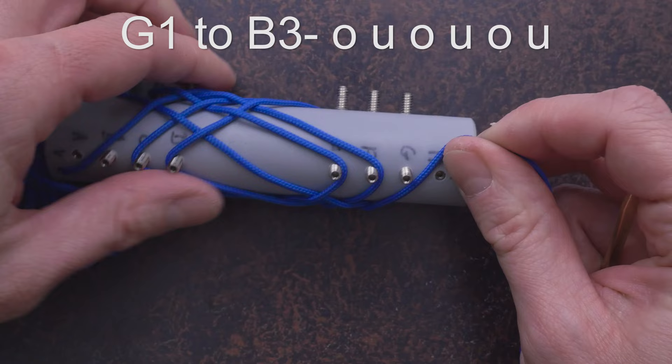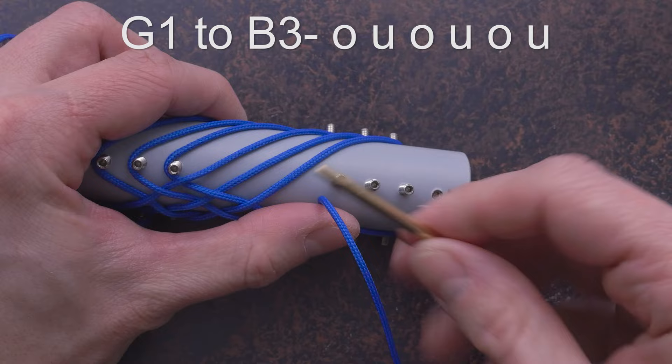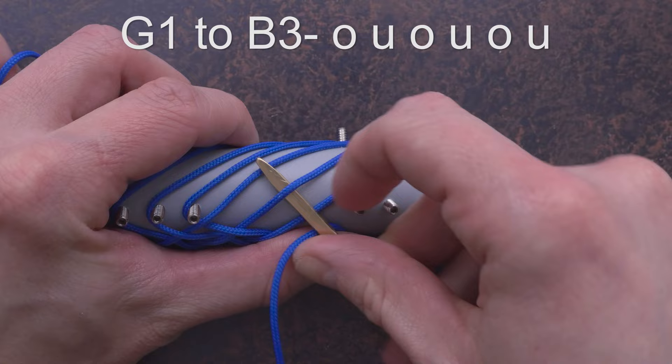From G1, we move to B3, going over, then under.